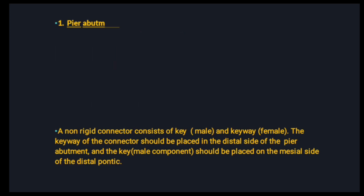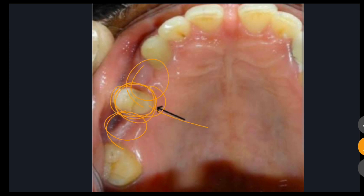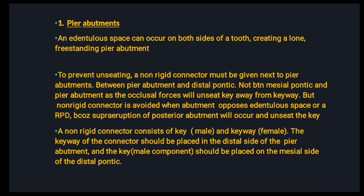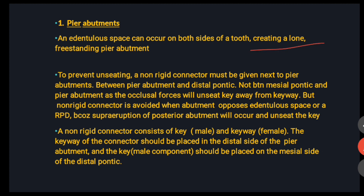Starting with pier abutments — here you can see edentulous space on both sides, and if this tooth acts as an abutment, that is your pier abutment. So a pier abutment occurs when edentulous spaces exist on both sides of a tooth, creating a lone free-standing abutment.